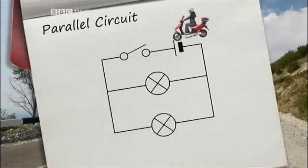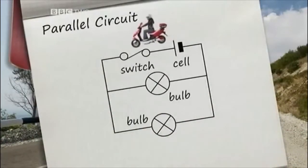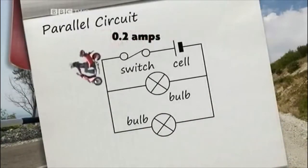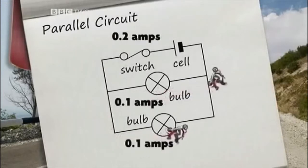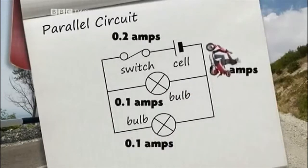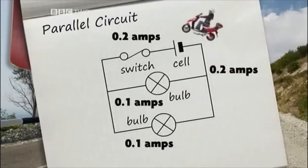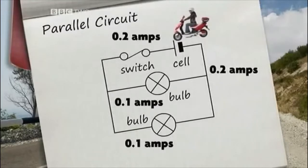In a parallel circuit, the current has to divide itself between the different paths. These two bulbs are identical, so in the parallel part of this circuit, the current is split in half, and each bulb gets just 0.1 amps.